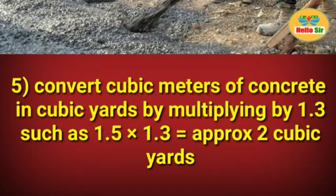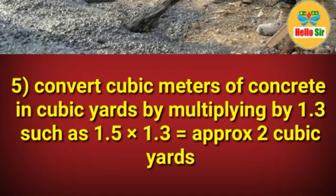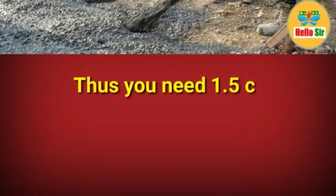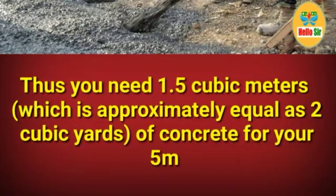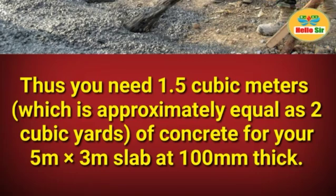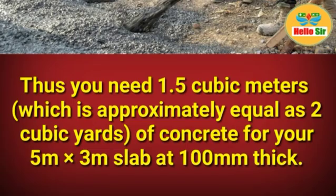Then convert cubic meters of concrete to cubic yards by multiplying by 1.3: 1.5 multiplied by 1.3 equals approximately 2 cubic yards. Thus, you need 1.5 cubic meters, which is approximately equal to 2 cubic yards of concrete for your 5-meter by 3-meter slab at 100mm thick.